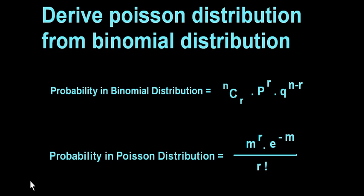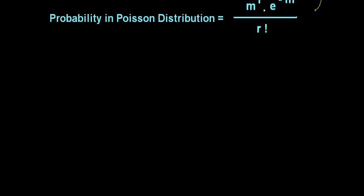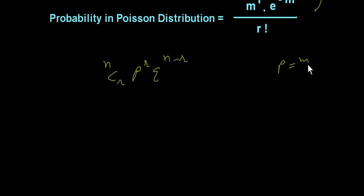We have to show that the Poisson formula is derived from the binomial formula. So now we are taking the binomial formula: n C r times p to the r times q to the n minus r. You know that p is m divided by n, where p is probability — it is the favorable number over total numbers — and q will be 1 minus p.